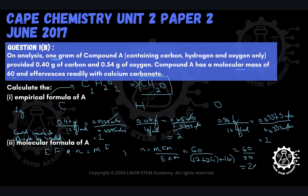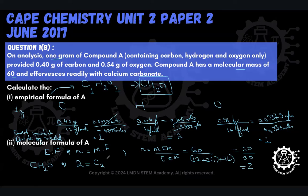Now we are ready to plug into our formula. The empirical formula was CH₂O, and we multiply it by our factor N of 2. All we're doing is multiplying each atom in the empirical formula by 2 to get the actual number of atoms in compound A — the molecular formula. Multiplying: C becomes C₂, 2 hydrogens become H₄, and 1 oxygen becomes O₂. So our molecular formula of A is C₂H₄O₂.